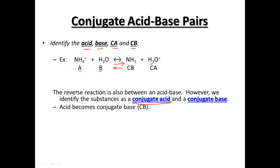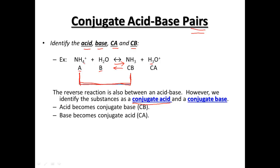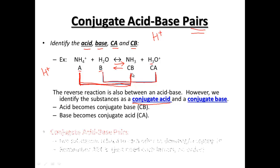So our acid becomes the conjugate base, and the base becomes the conjugate acid. We're going to pair them together to show our acid-base pairs. NH4 and NH3 are paired together — all that's different between them is that H+, either being donated or received. The other pair is going to be our base H2O and H3O+. All that's different between those two is that H+, either being donated or received.